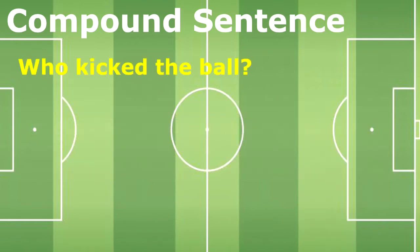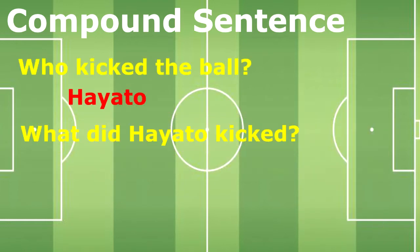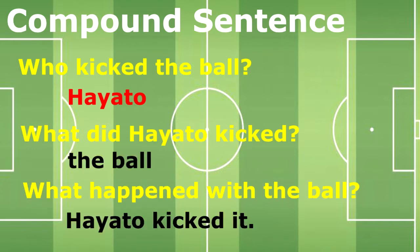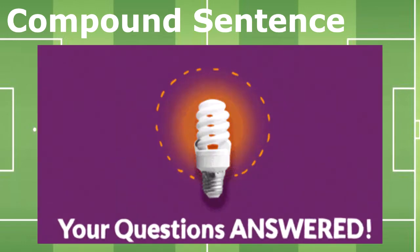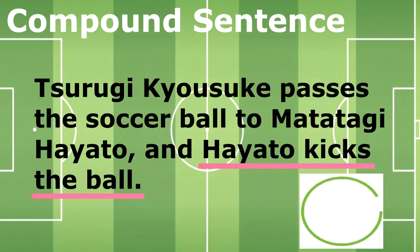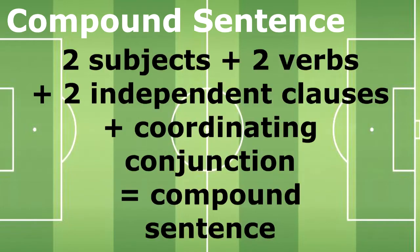Who kicked the ball? Hayato. What did Hayato kick? The ball. What happened with the ball? Hayato kicked it. All questions were answered, so the second clause is really an independent clause as well. Two subjects, two verbs, two independent clauses, and a coordinating conjunction equals compound sentence.